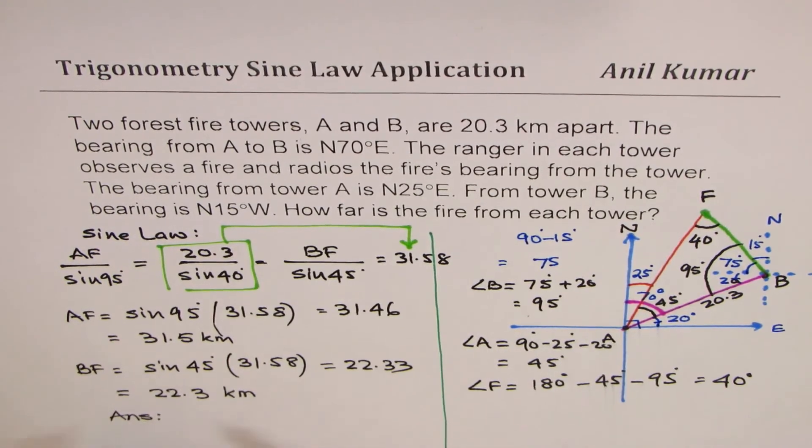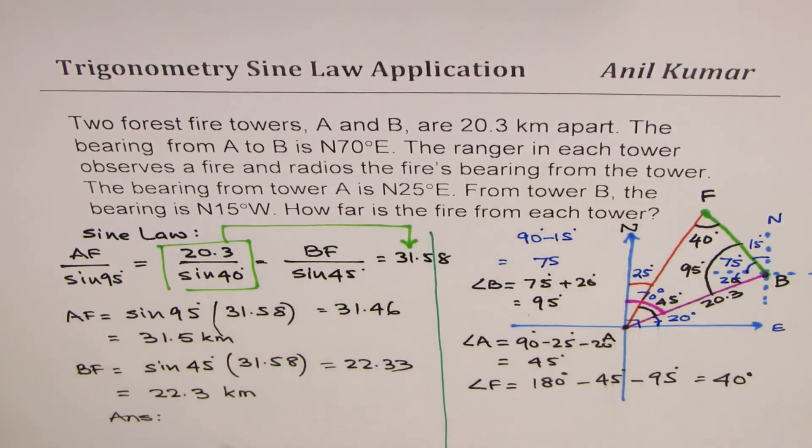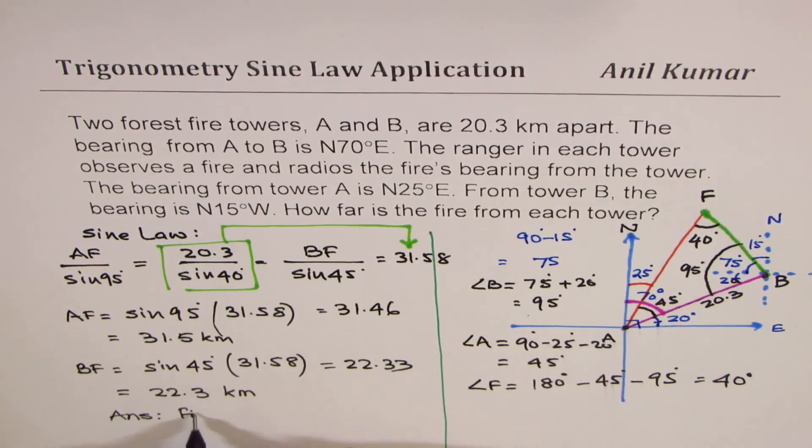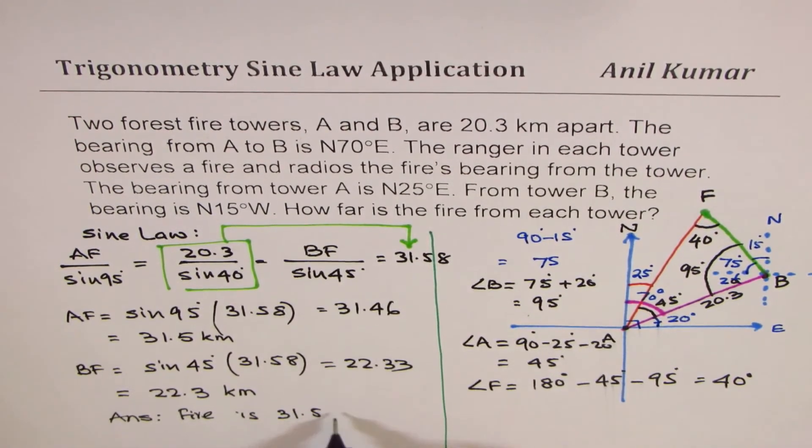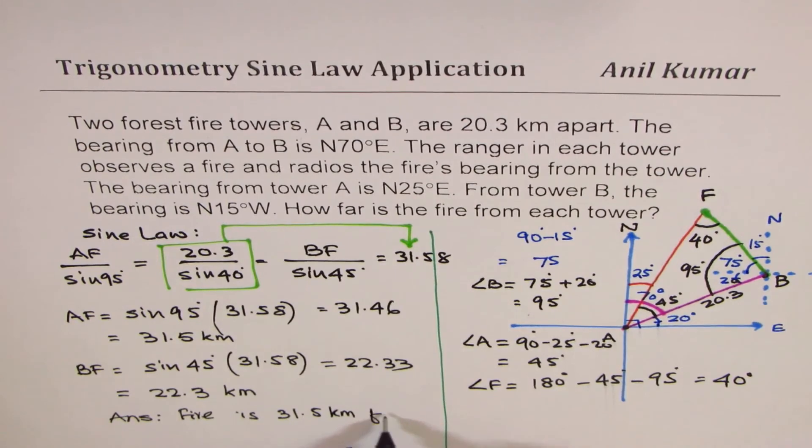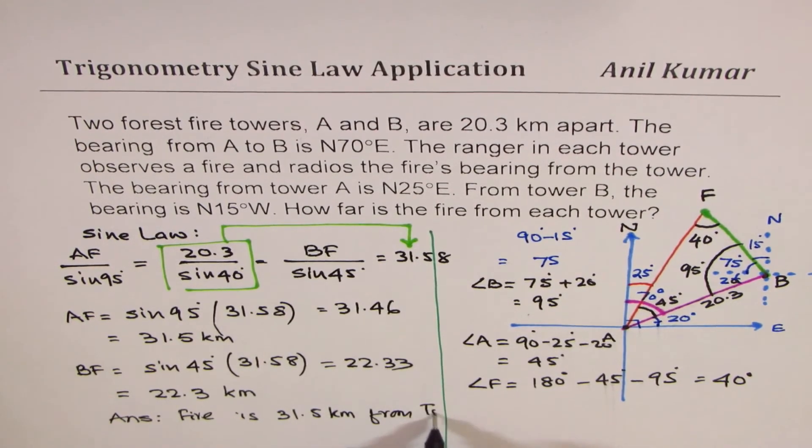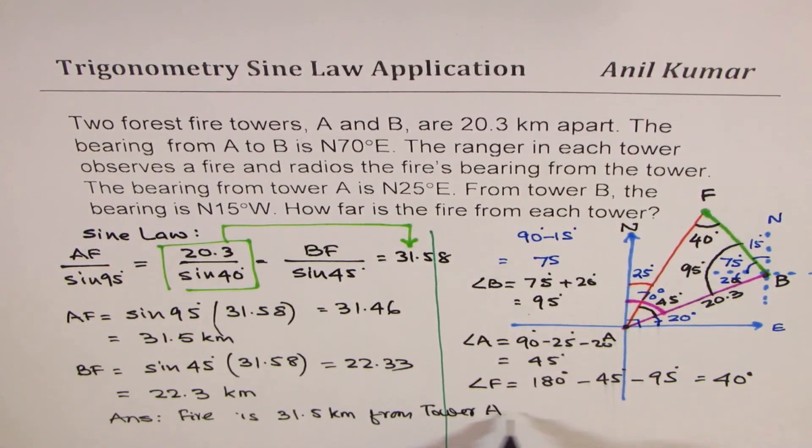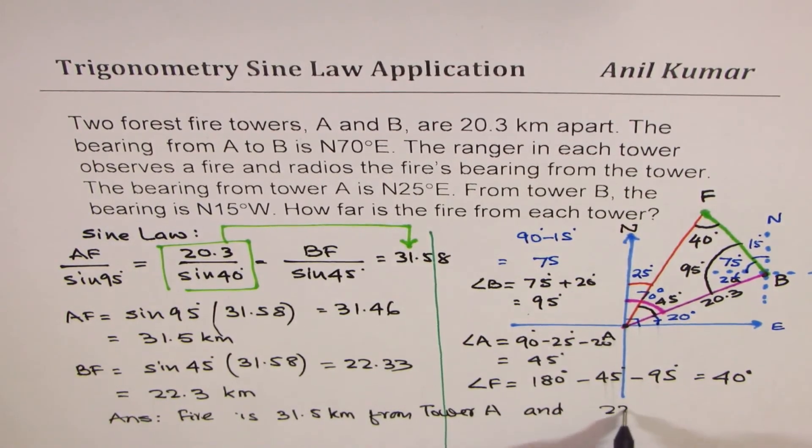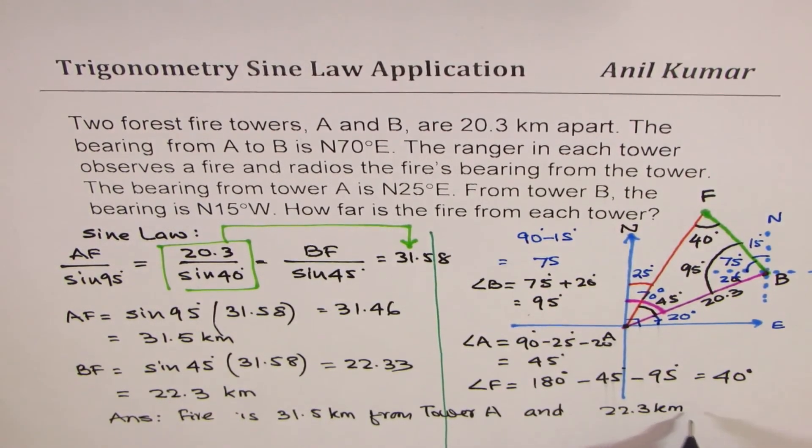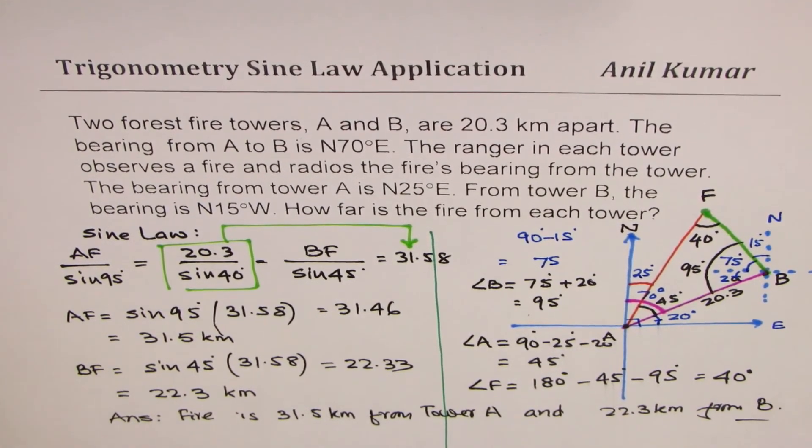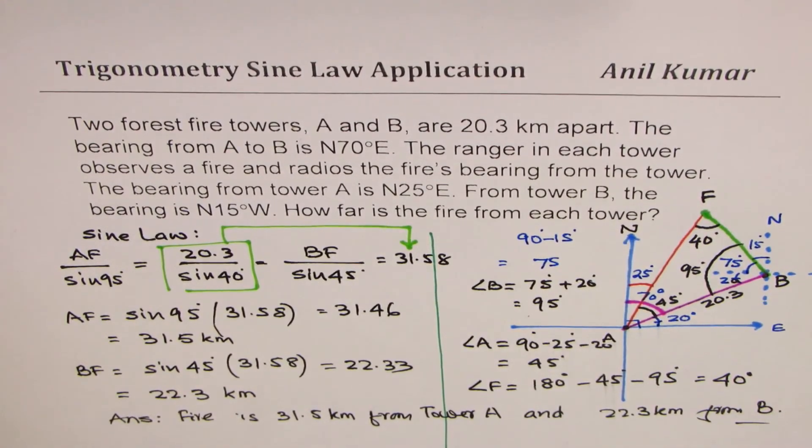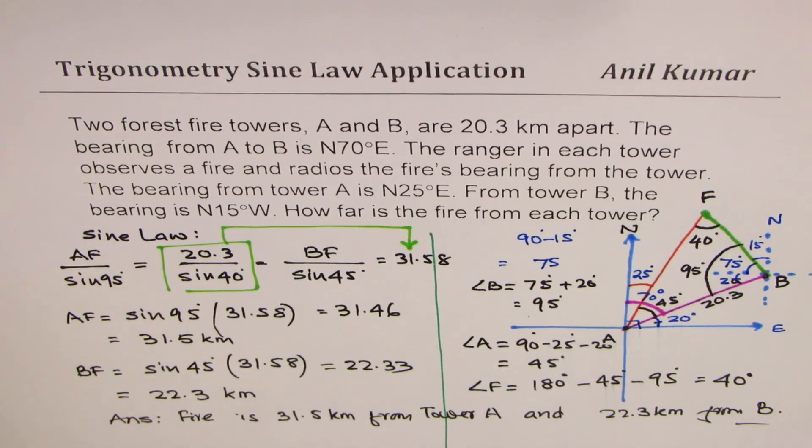So the answer is, how far is fire from each station? Fire is 31.5 kilometers from tower A and 22.3 kilometers from tower B. So that is how we can answer. So I hope it is absolutely clear how to solve such questions.